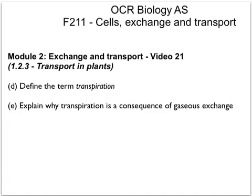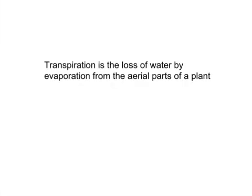In this video, we'll define the term transpiration and explain why transpiration is a consequence of gaseous exchange. The literal textbook definition is the loss of water by evaporation from the aerial parts of a plant. The aerial parts means the parts higher up — not the roots — mainly the leaves, which are the main site of transpiration and gaseous exchange in a plant.